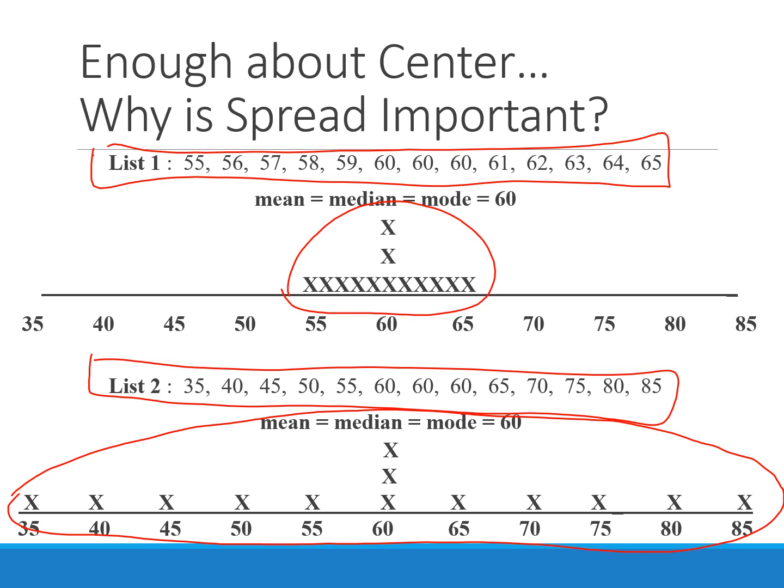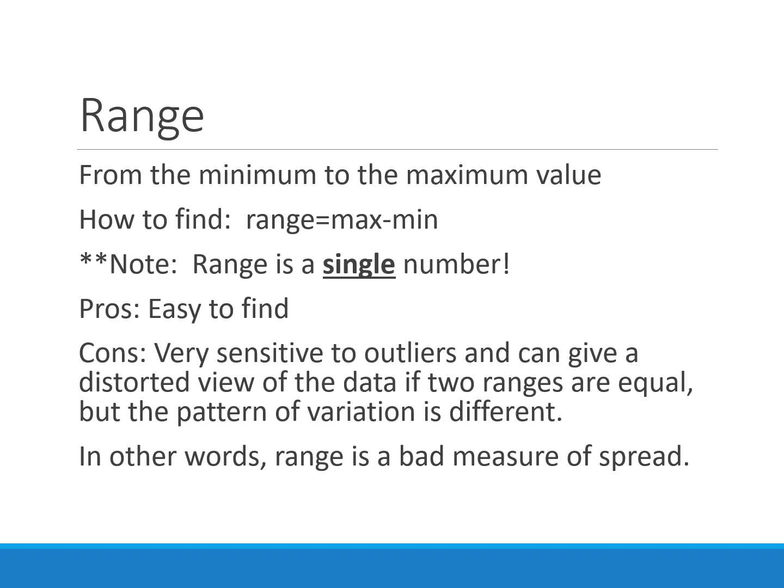For measures of spread: the first is the range, which is just how far it is from the minimum to maximum value. It's very easy to find; however, since outliers would be either those minimum or maximum values, the range is very sensitive to outliers and gives a distorted view any time an outlier is present. So it's not a good measure of spread — we only give it as supplemental information alongside one of the next two measures.